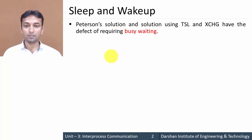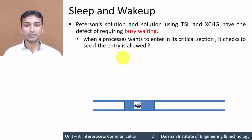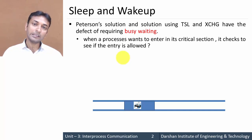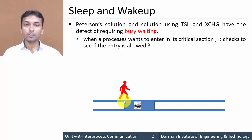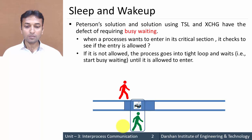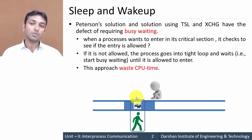Whenever any process wants to enter its critical section and is not allowed to do so, that process needs to wait until some other process that is in the critical section exits. That is known as busy waiting. For example, suppose a process wants to enter its critical section, but the resource — say, a printer — is already allocated to a green process. This process needs to wait, and that waiting is busy waiting.